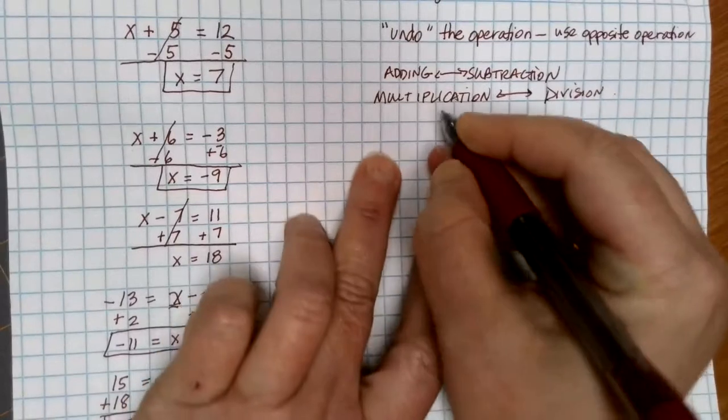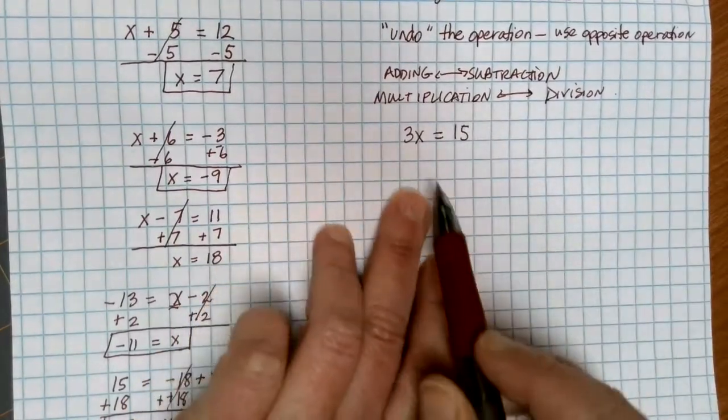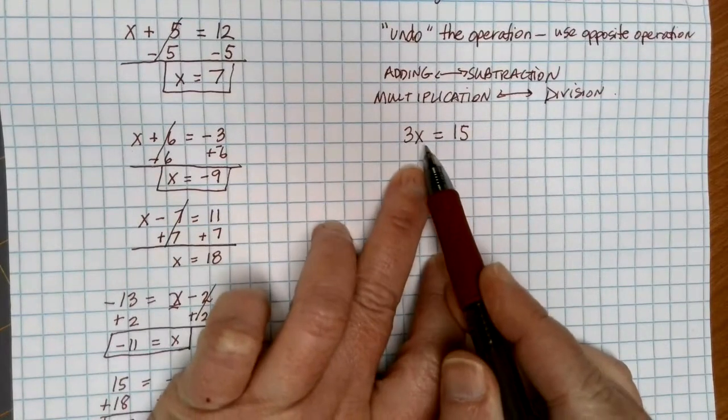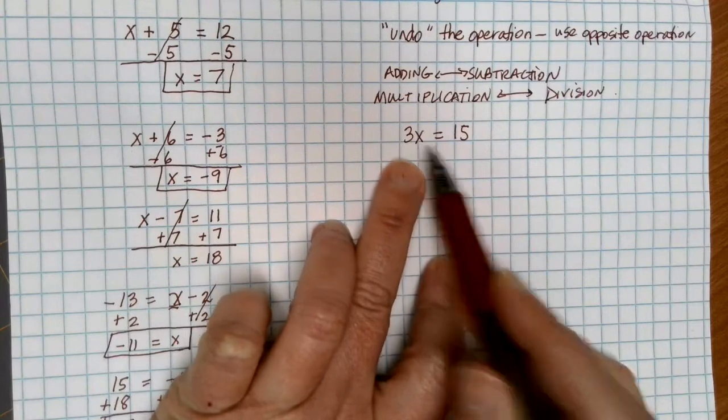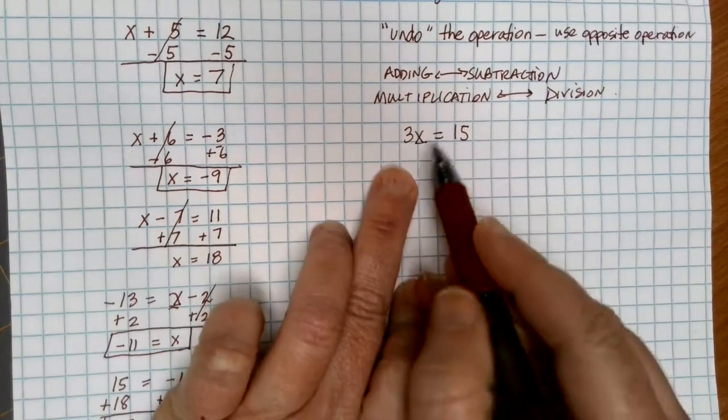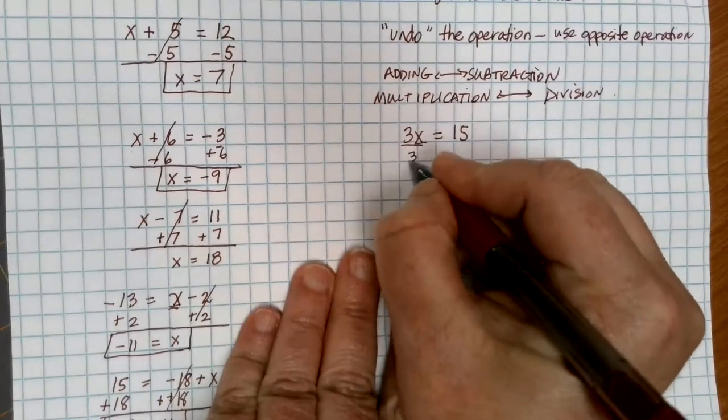If we have, as an example, this equation, 3x equals 15, remember if we have a number and a variable next to each other, it means that they're being multiplied. So if I want to get the x by itself, I have to get rid of multiplying by 3, and to do that, I can divide by 3.